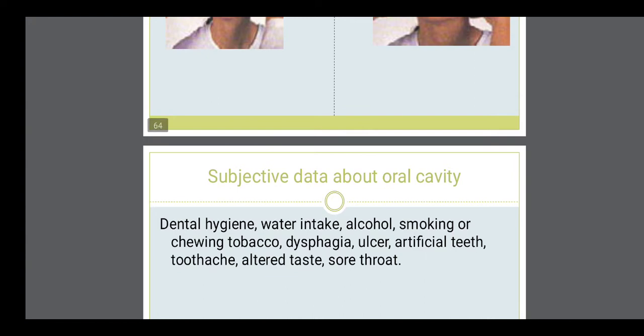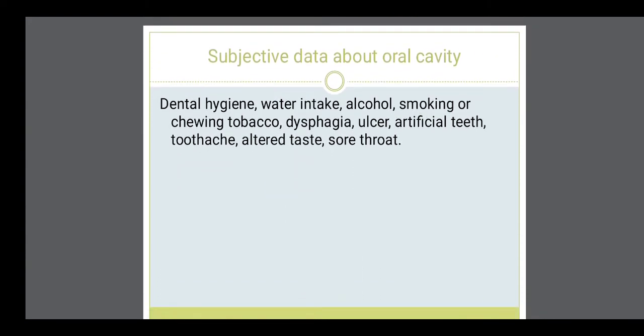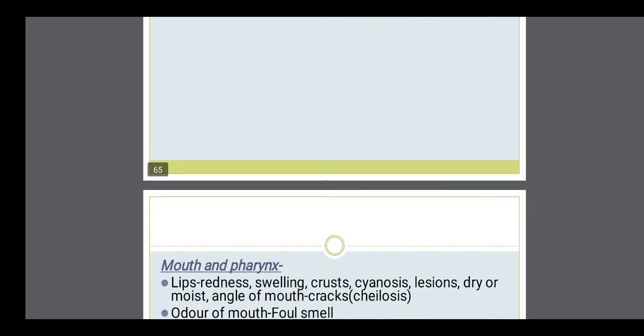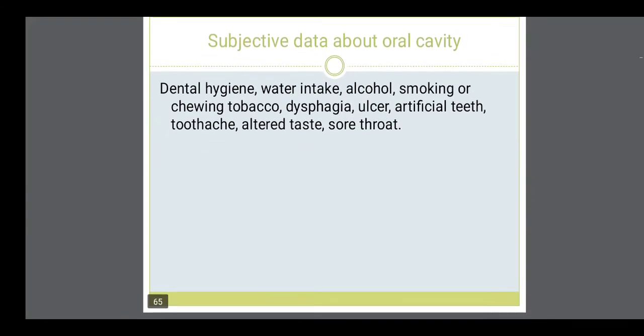Then subjective data about the oral cavity. In that — the examination related to mouth and pharynx — you have to ask about: dental hygiene, water intake, alcohol use, smoking, chewing tobacco, dysphagia, ulcer, artificial teeth, toothache, altered taste, and whether sore throat is there or not. These are the questions which have to be asked when taking history related to mouth and pharynx examination.